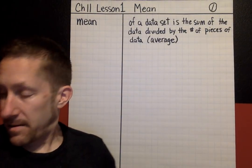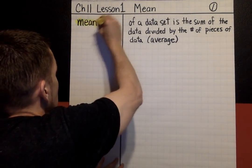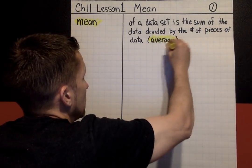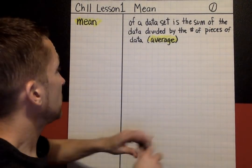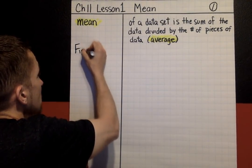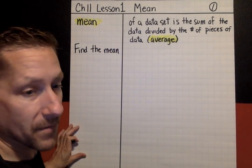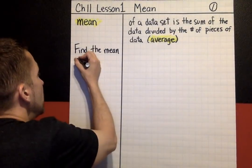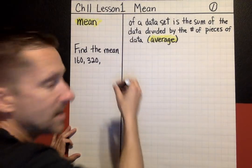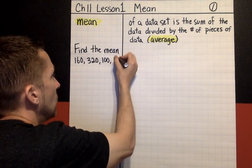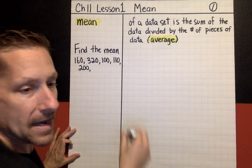This is a lot of words for something that I know you've done before in elementary school, so let's look at an example. I want you to find the mean of the following set of data: 160, 320, 100, 110, 200, and 220.